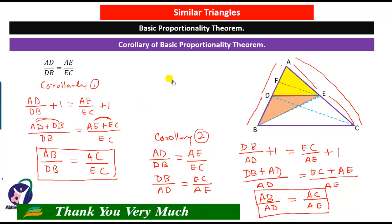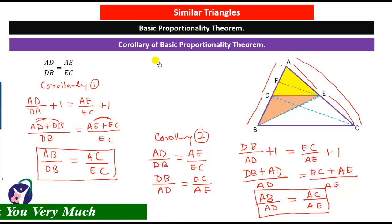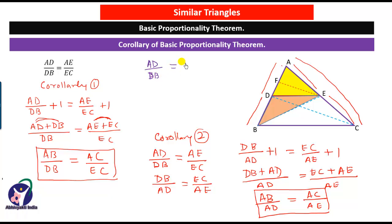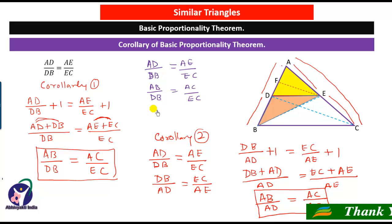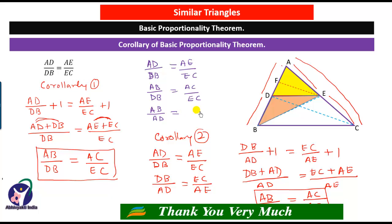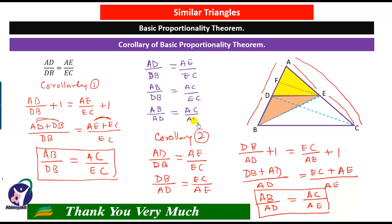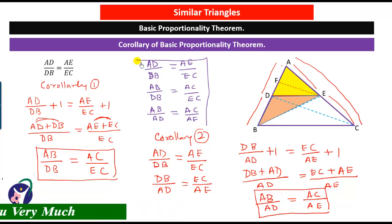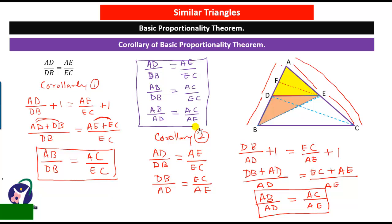So remember these three things that are used to solve problems on the Basic Proportionality Theorem: first, AD upon DB equals AE upon EC; second by Corollary 1, AB upon DB equals AC upon EC; and third by Corollary 2, AB upon AD equals AC upon AE.